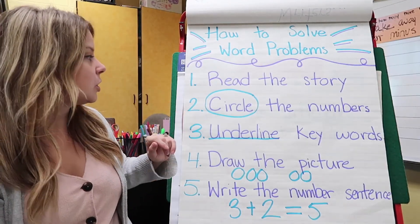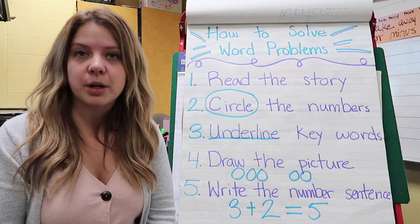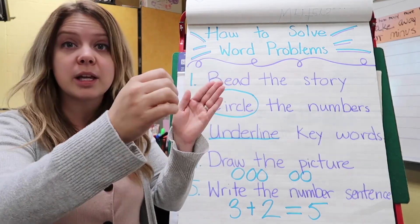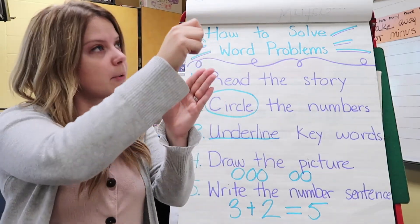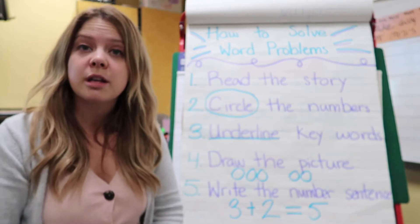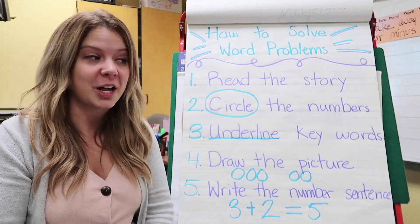Here's a great strategy. Number two, circle the numbers. So, as you're reading the story and you hear someone read a number or you see a number, circle it, because those are the numbers that you're going to need in your number sentence later on.